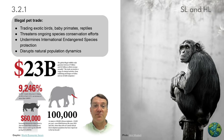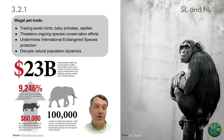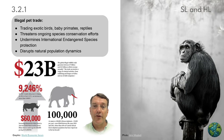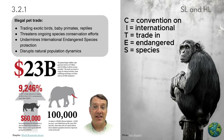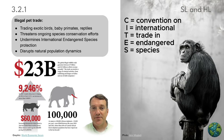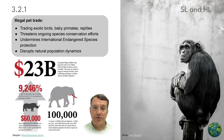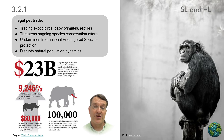The illegal pet trade threatens biodiversity by removing animals from their natural habitats for the exotic pet market. This trade targets birds, primates, and reptiles valued for their rarity or appearance. Beyond reducing wild populations, it undermines legitimate conservation efforts and international protection agreements like CITES, the Convention on International Trade in Endangered Species. When animals are removed from their ecosystems, it disrupts natural population dynamics and can trigger cascading effects throughout the food web.